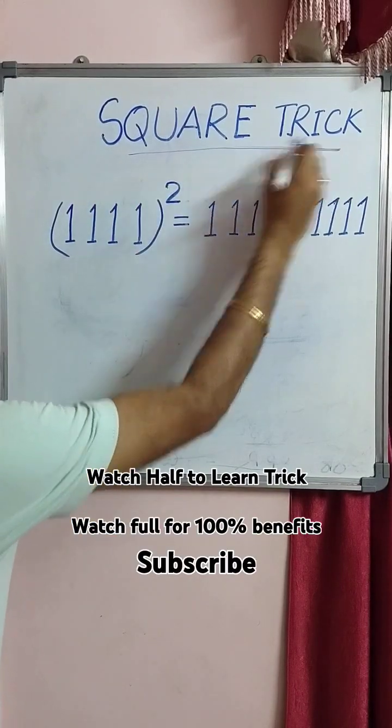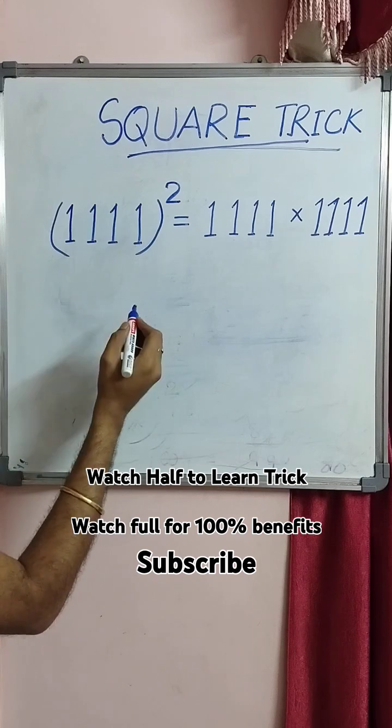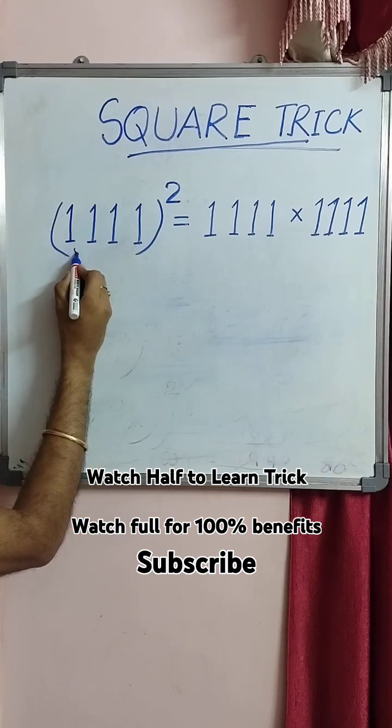Finding a square of a number that is a square trick. Today's number is finding a square of a number whose all digits are one.